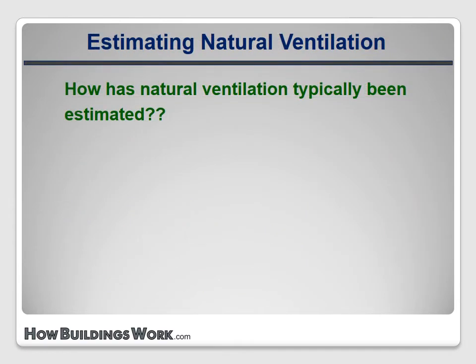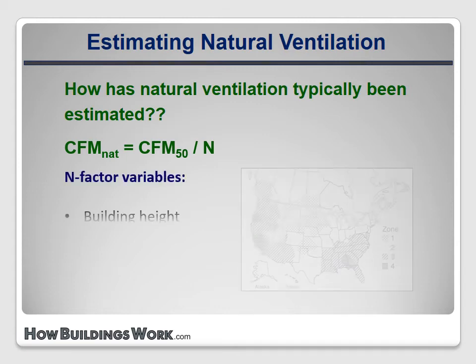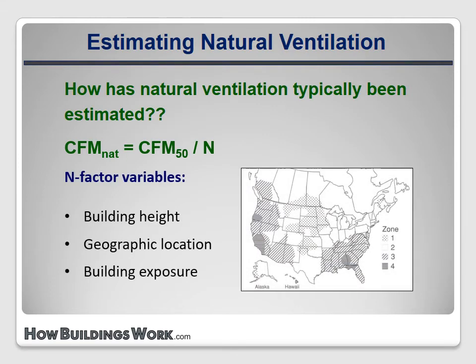If you've worked under an energy efficiency program, you've probably used a simple formula to estimate the natural air leakage from a blower door reading. This method first came into use in the 1990s, and it's still included in the BPI Building Analyst standard. You simply divide the blower door reading by an N factor. The N factor is obtained from tables that always take the building height and geographic location into account. They may also take shielding into account. We expect more natural leakage from houses that are taller, more exposed to the wind, and situated in colder climates.